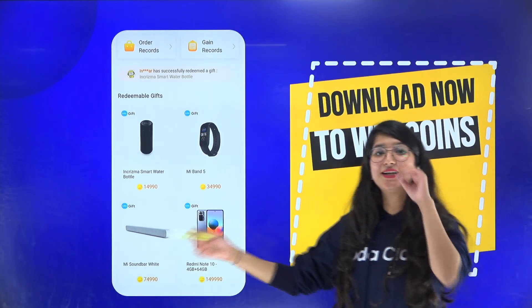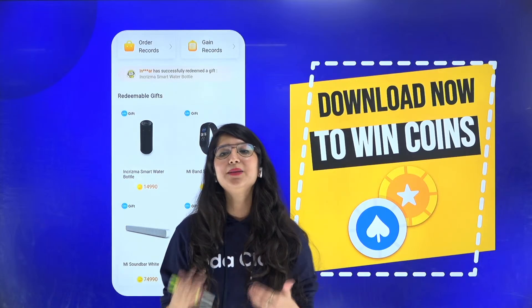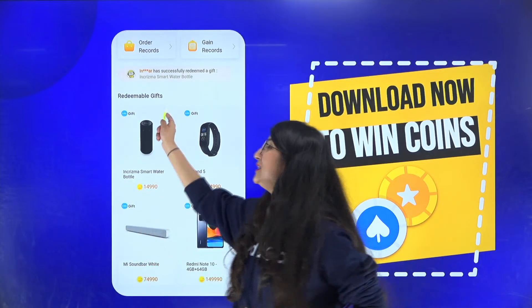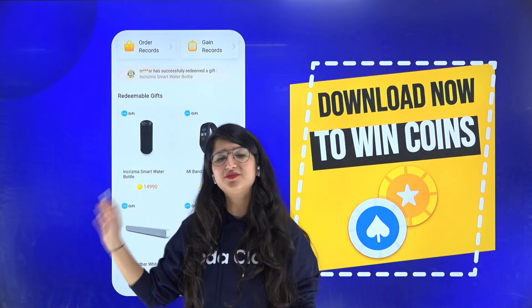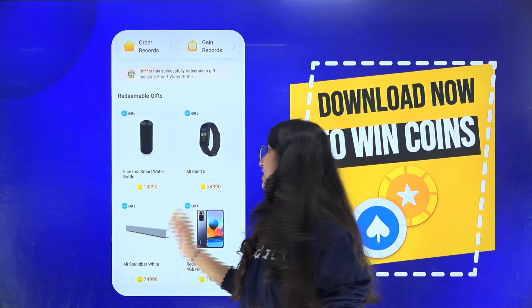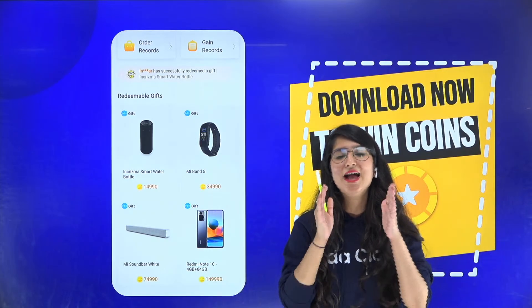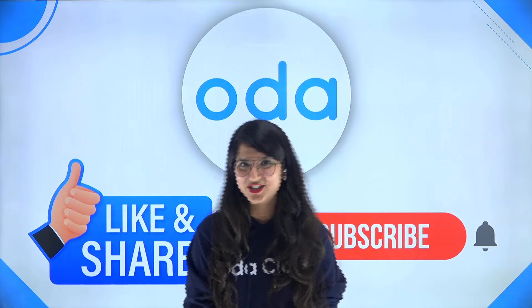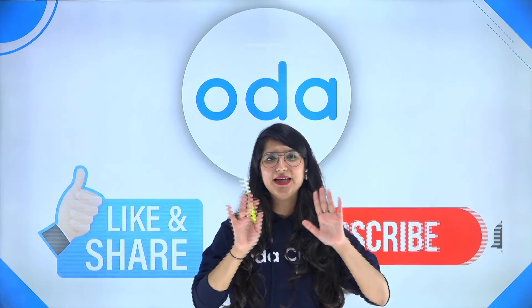At Oda, you can learn and earn at the same time! Earn coins for good performance and spend them at the Oda Mall, where you can buy smart water bottles, smart watches, soundbars, and smartphones. Hurry up, enroll, and book your seats. Don't forget to like, share, and subscribe to our channel. Thank you kids for joining me — bye bye!